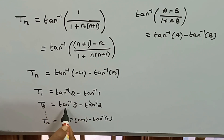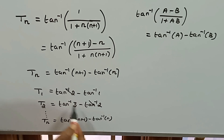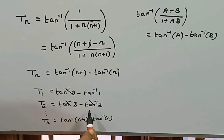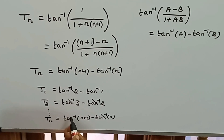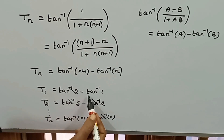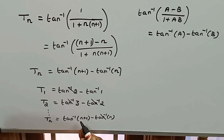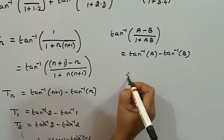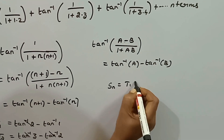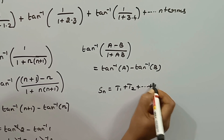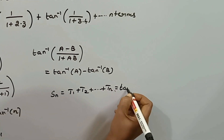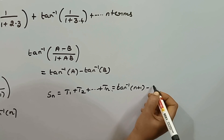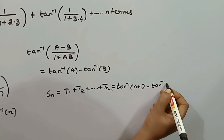When we add t1 plus t2 plus ... plus tn, the intermediate terms cancel. The balance remaining is tan inverse of n plus 1 minus tan inverse of 1. Now we have the value of Sn.